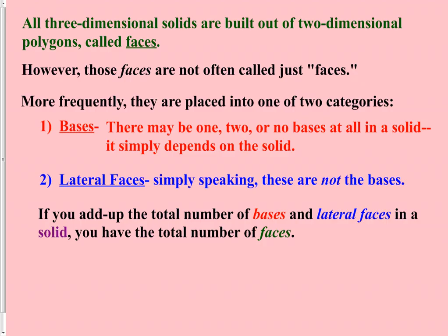Some of the more specific terms: our three-dimensional solids are built out of two-dimensional polygons, and those two-dimensional polygons are called the faces of the solid. If you count up all of the sides of your solid, those are the total number of faces, but the number of faces can be broken down into two smaller categories, which are the bases and the lateral faces.